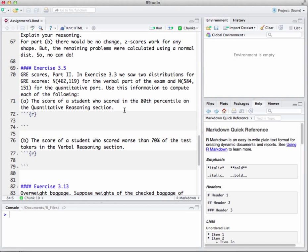This is GRE scores part two in exercise 3.3. We saw two distributions for GRE scores. One was for the verbal and the other for the quantitative part. We want to use this information to compute each of the following. A, the score of a student who scored in the 80th percentile on the quantitative reasoning section and then B, score of a student who scored worse than 70% of the test takers in the verbal reasoning section.